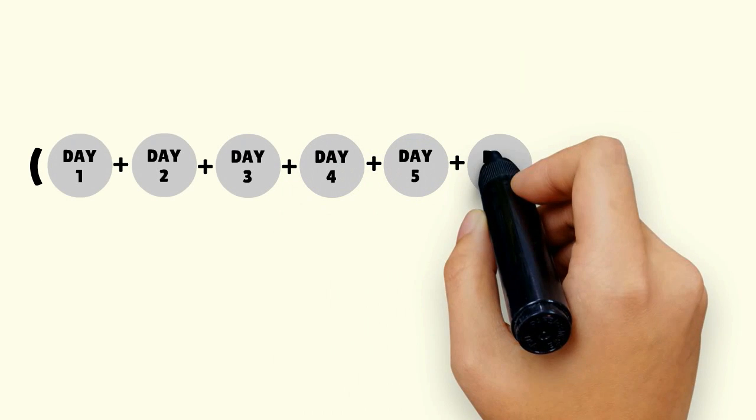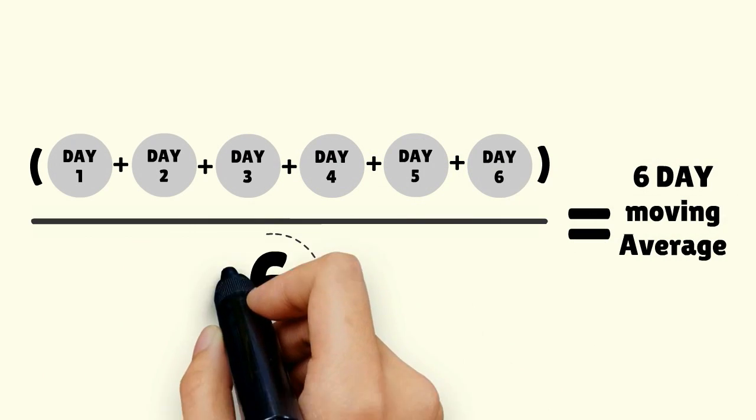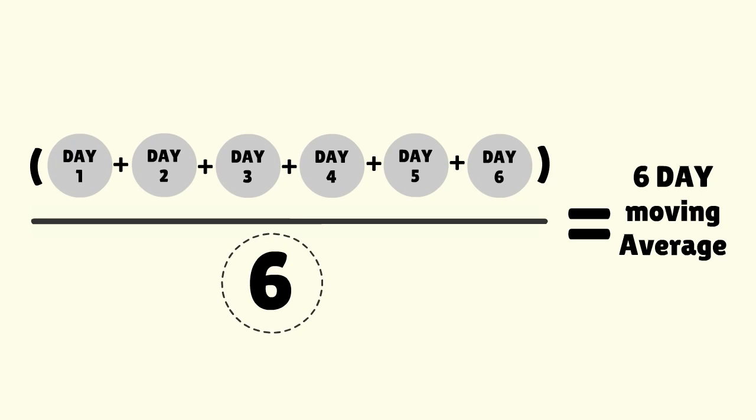You don't need complex math to compute an SMA. You just add up the closing prices for the number of days you are considering, like 6 in this example, and divide by 6.